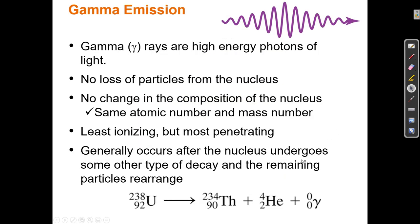Gamma emission is different from alpha and beta decay. Alpha particles and beta particles are matter particles — a helium nucleus and an electron respectively. Gamma rays are not matter particles; they are electromagnetic radiation, high-energy photons of light. Technically a photon is a particle without mass. So alpha and beta are matter particles, and gamma rays are energy particles — photons. During gamma emission there is no loss of particles from the nucleus: no protons or neutrons are lost. The gamma ray has zero mass and zero charge.